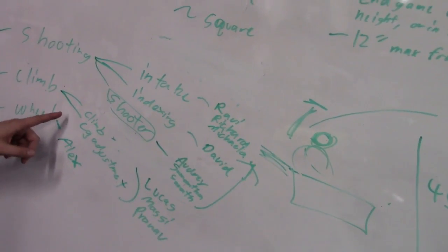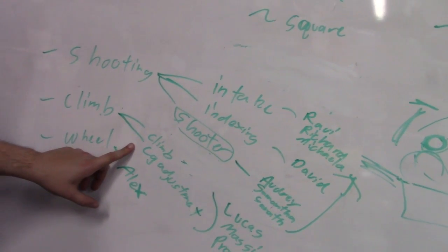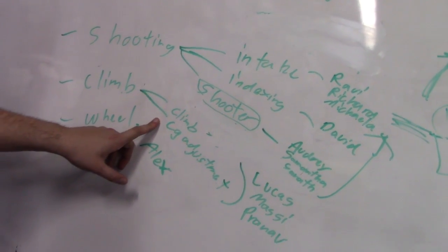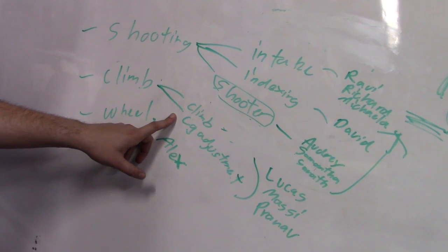So the climb subsystem we have broken down into two things. First of all we need to be able to physically climb with our robot. We need to be able to lift the robot into the air off the ground.